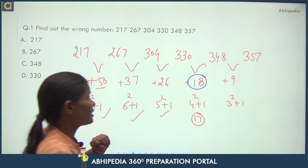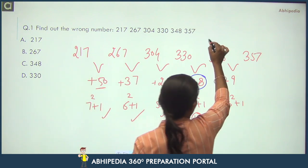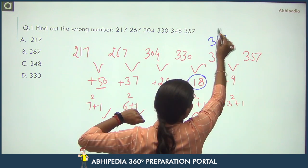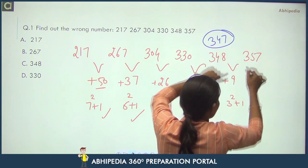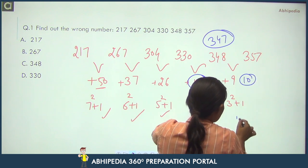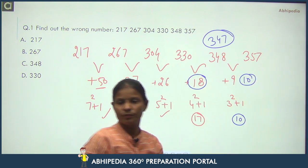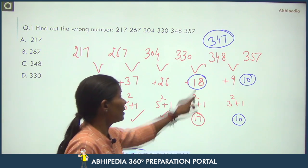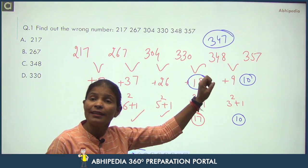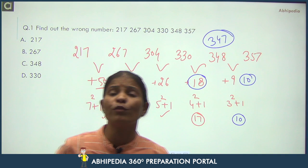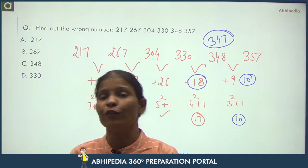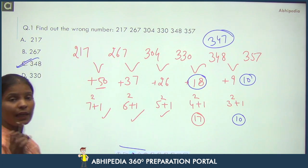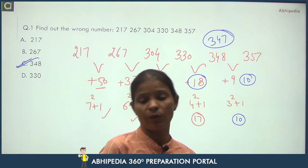If we take the correct difference of 17, then the number should be 347 instead of 348. And if it is 347, then the next difference becomes 10, which is 3²+1 — correct! That means 348 is the wrong number, and in its place there should be 347. Your answer is 348.